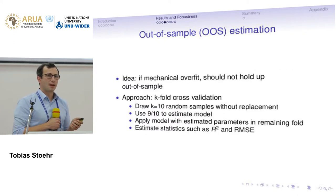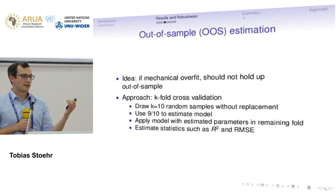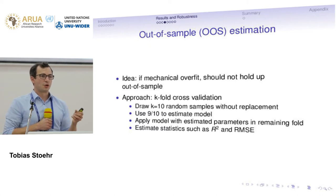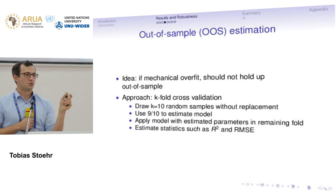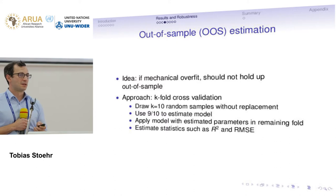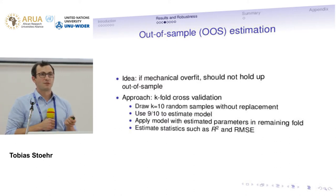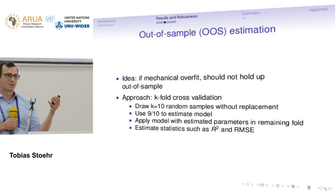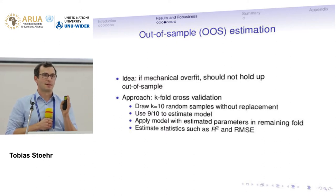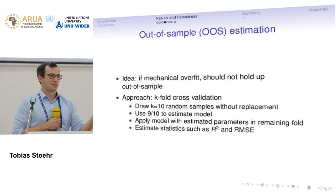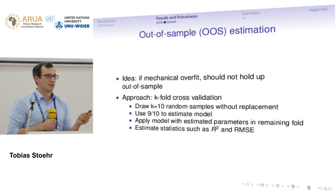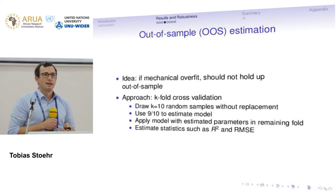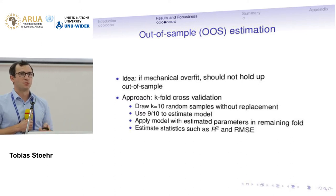Another approach is out-of-sample estimation. If there's a mechanical overfit from adding too many regressors, it should not work if we take only part of our sample to estimate the model and then use the coefficients to predict on the rest. A nice standardized method for this is k-fold cross-validation — dividing the data into ten folds, using nine to train the model, testing it on the remaining 10%, and going systematically through all ten possibilities to get pseudo out-of-sample estimates.